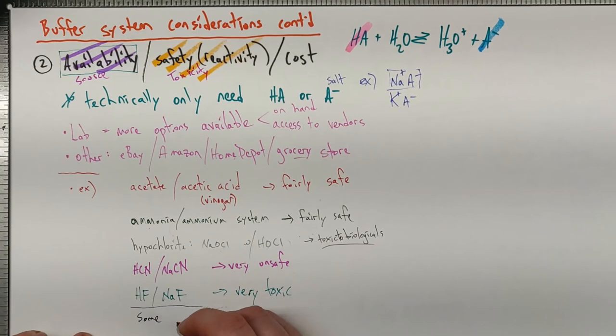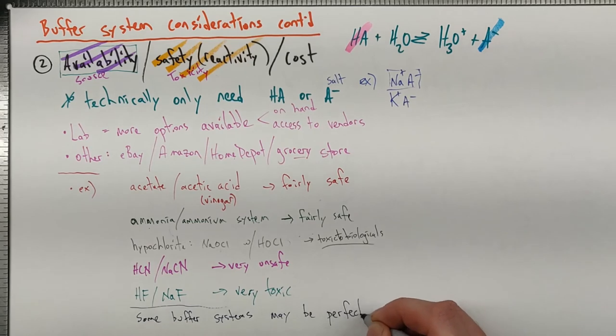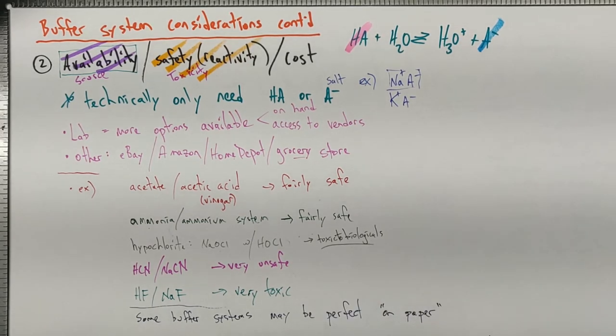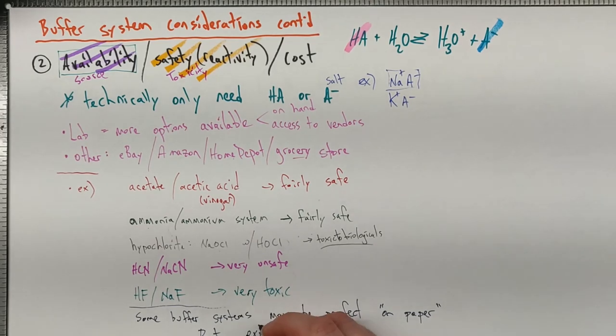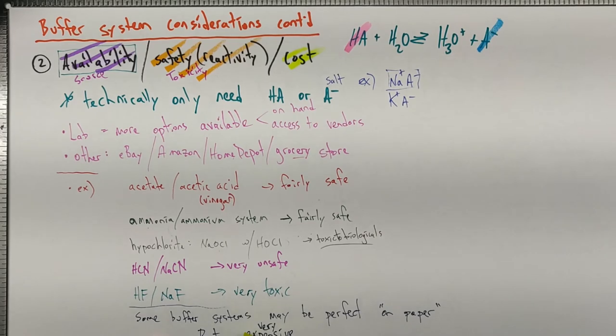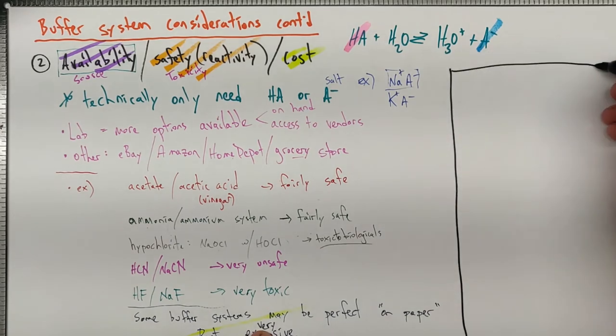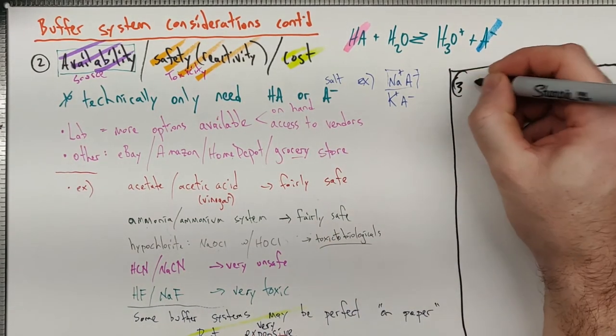Some buffer systems may be perfect on paper. They may be readily available, but they may be very expensive, which is okay if you have some specialized research that can afford that. Otherwise, you're kind of stuck. So we've got the idea of availability, reactivity, and cost. Do you want to work with it? Where can you get it? And how much does it cost? Then we need to talk about the third factor, which is solubility.